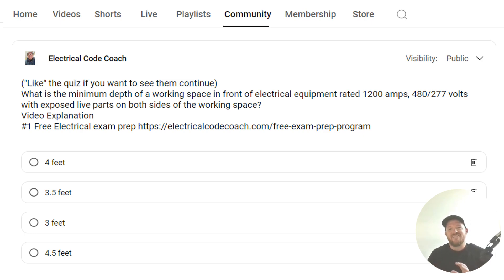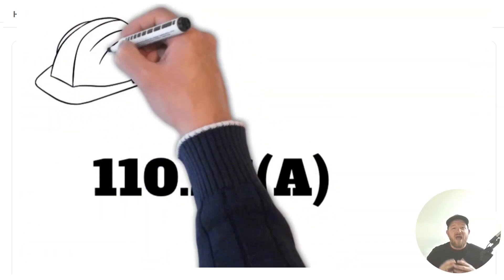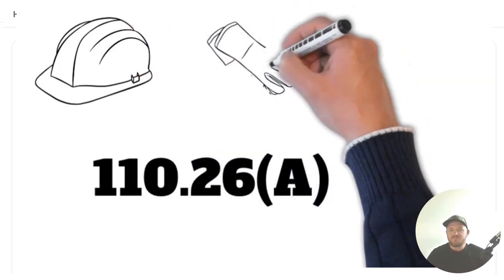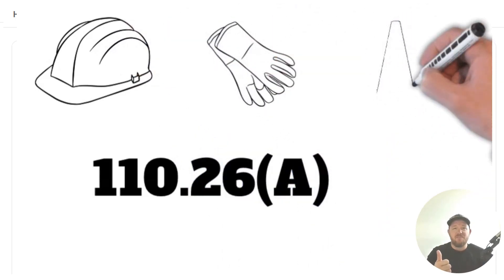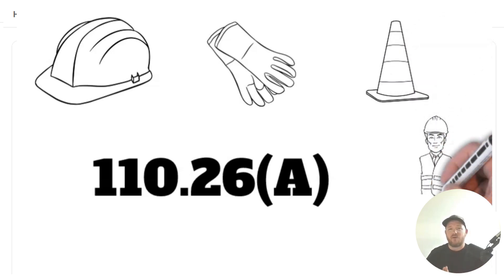The correct answer to this one is four feet. For this one, we're going to head to 110.26A. Now, everything that we're doing in the code is we are first protecting the people and then the property. If done correctly, it's harmonious.